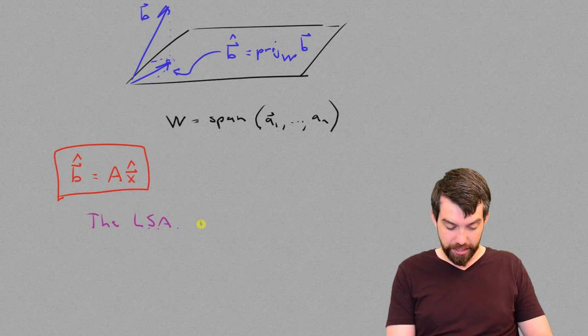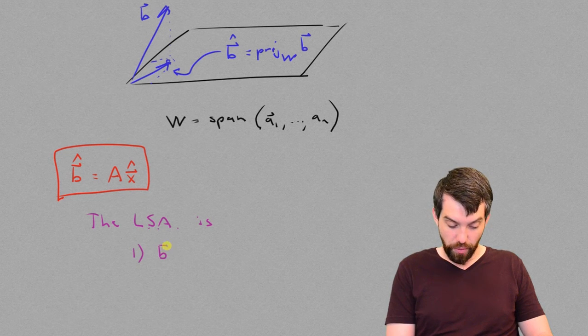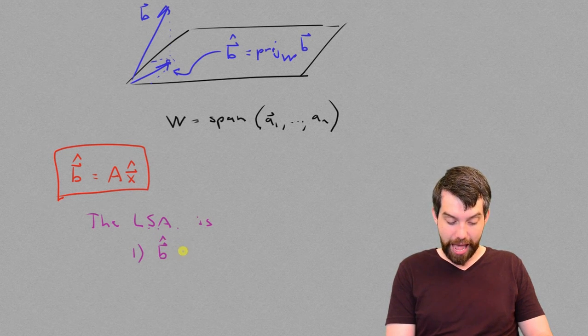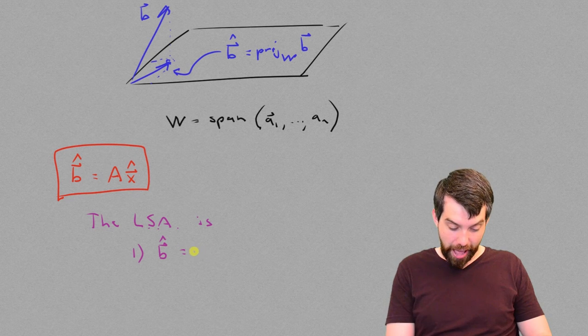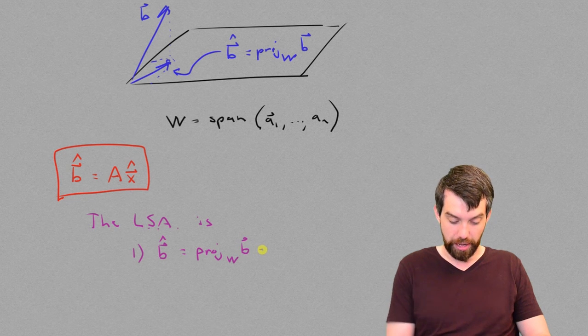the least squares approximation is a two-step process. First of all, I figure out what this b vector hat is, and this is given by the projection onto w of the vector b formula.